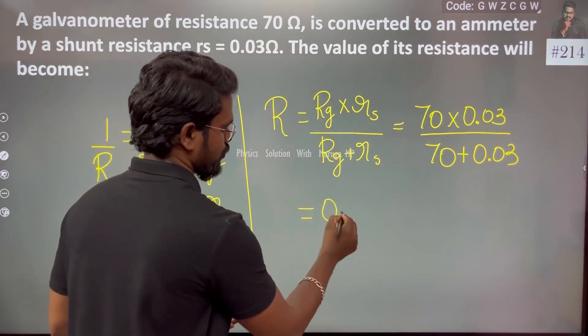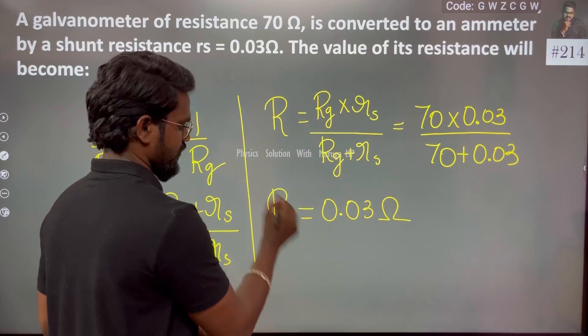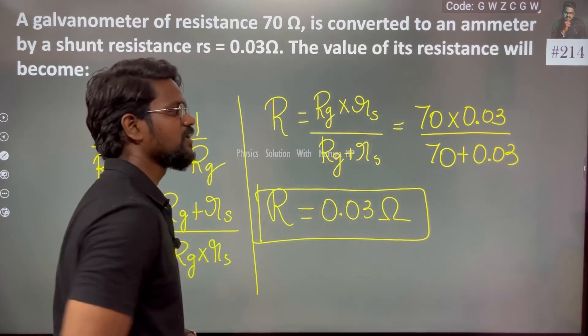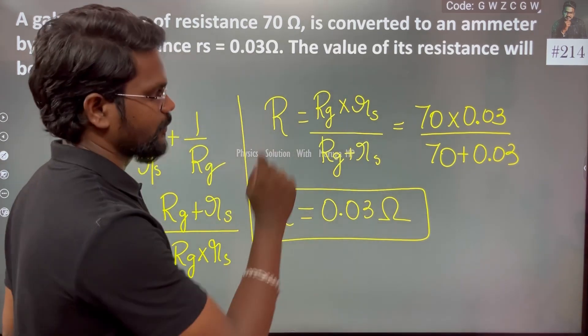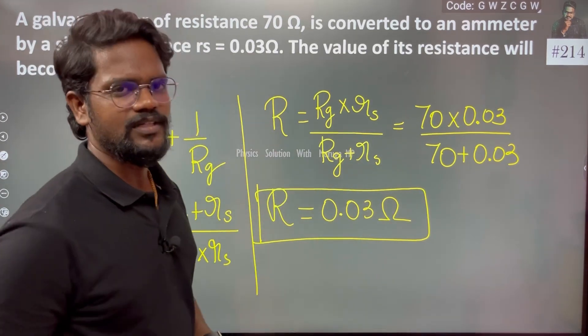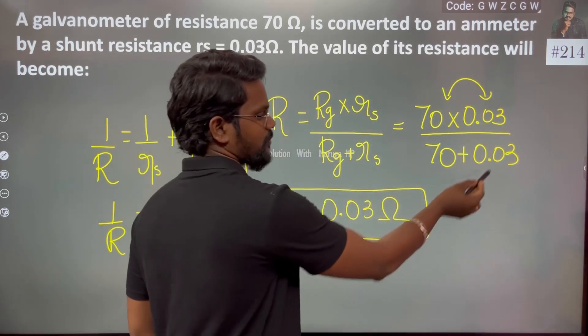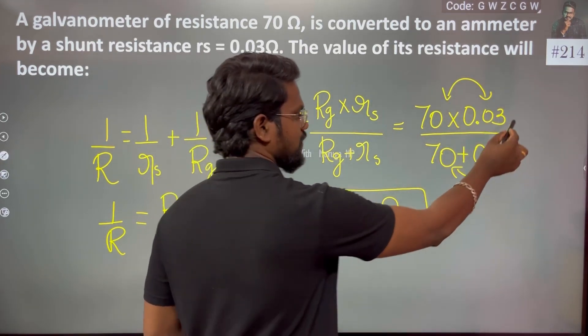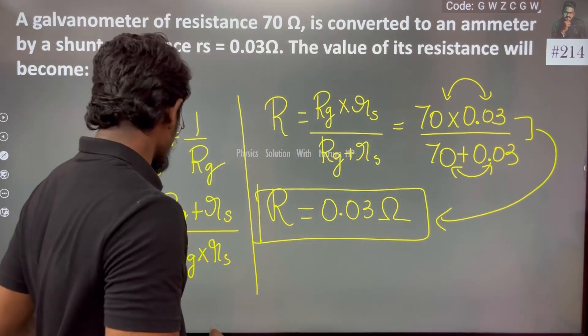Like 0.03 ohm. When you do the calculation, the value almost becomes like 0.03 ohm. So always pampering is not required - multiply, add and divide, and simultaneously we will be getting these values.